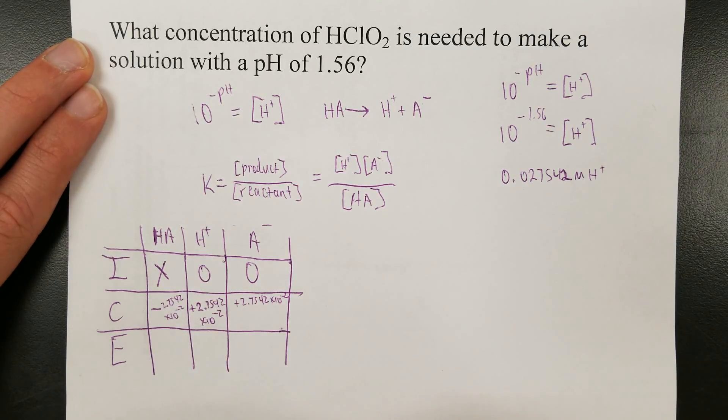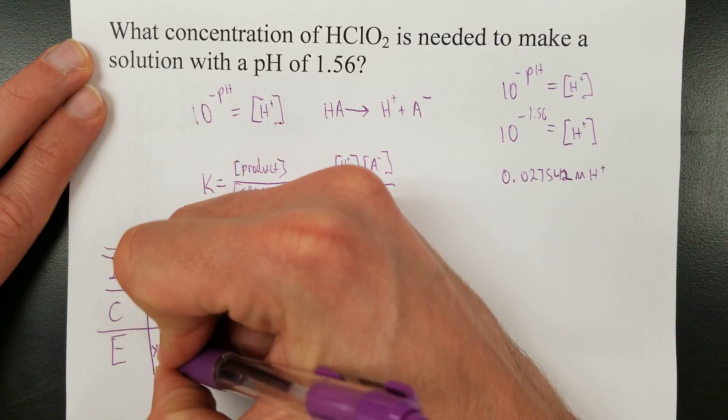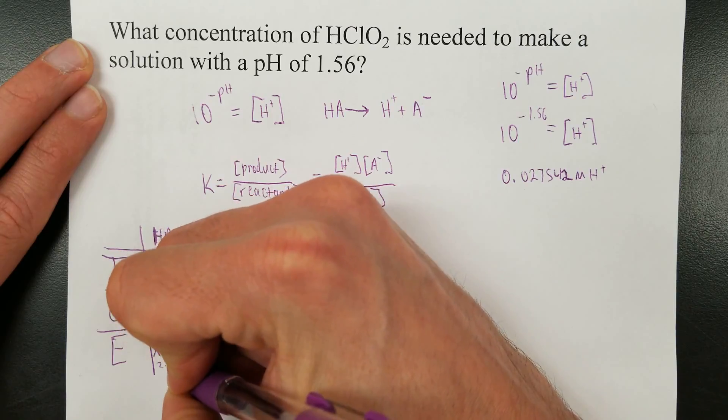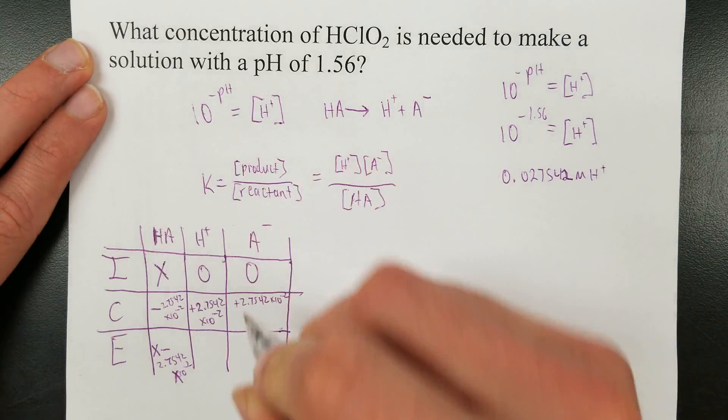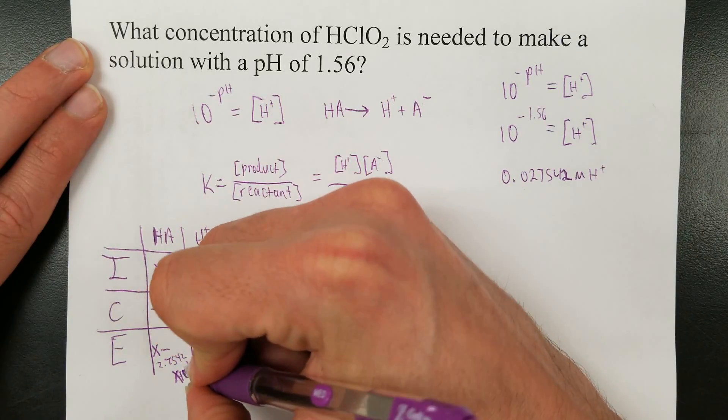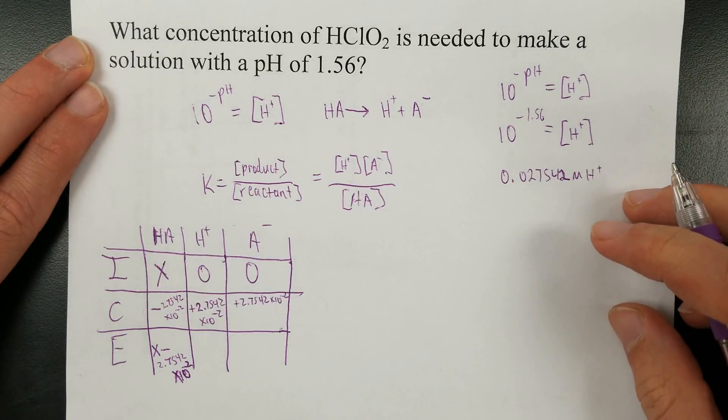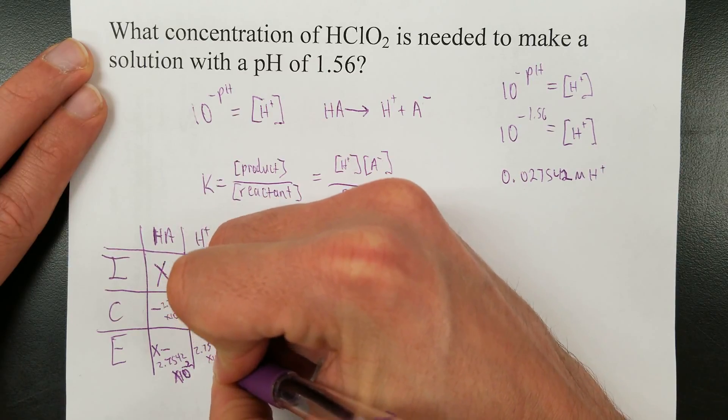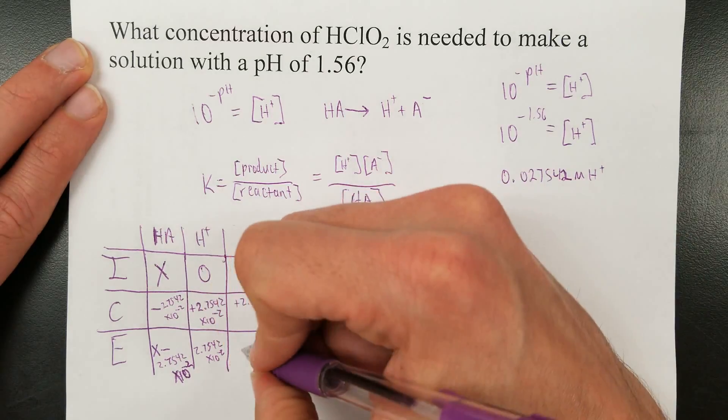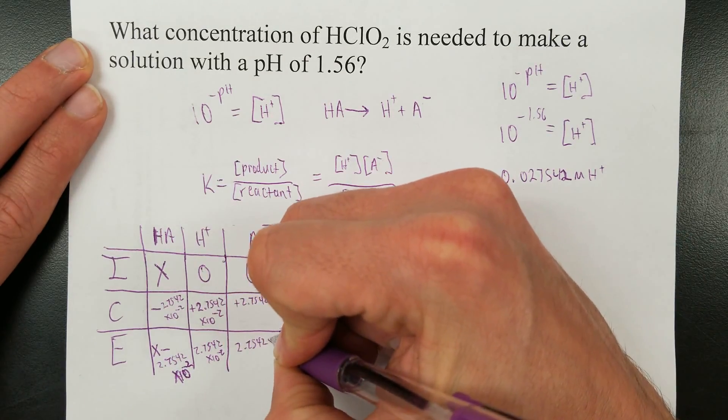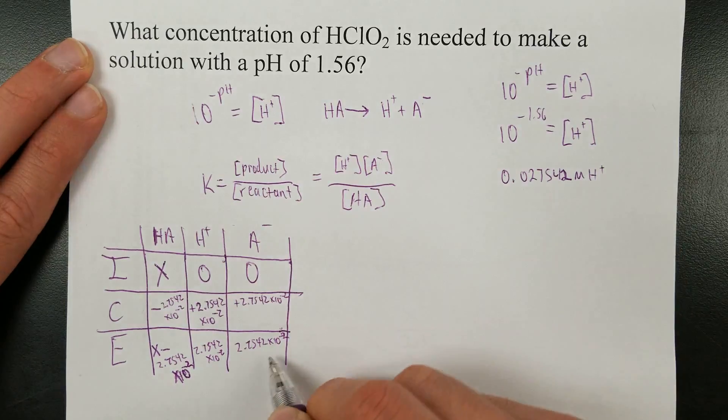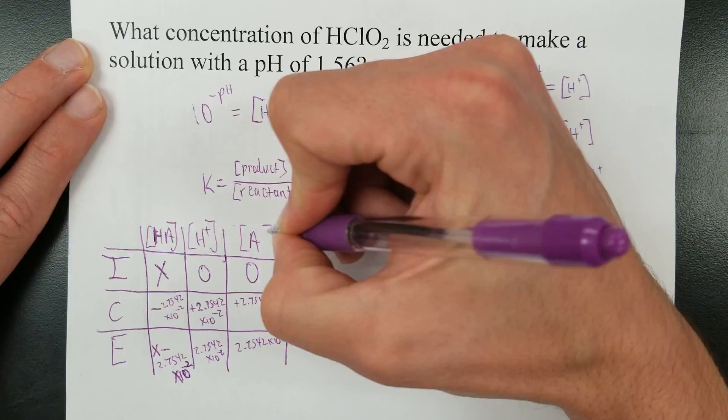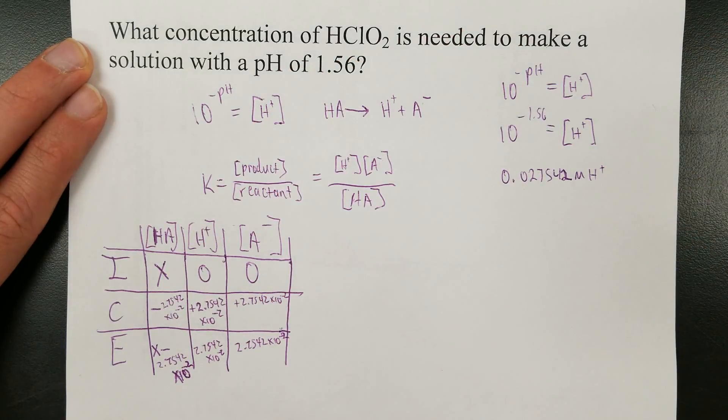So what's your final concentration? At equilibrium, whatever you started with, minus 2.7542 times 10 to the negative 2nd. This doesn't all fit on the paper, but I think you get the idea. This will be 2.7542 times 10 to the negative 2nd. That's the concentration of hydrogen ion you'll have at the end. 2.7542 times 10 to the negative 2nd. That's the concentration of anion that you'll have left over at the end. And we'll assume units of moles per liter here.